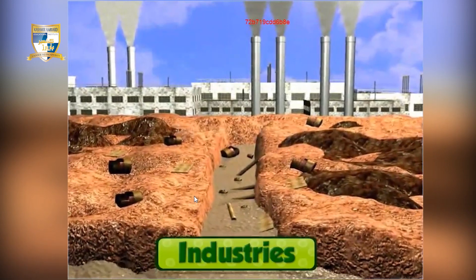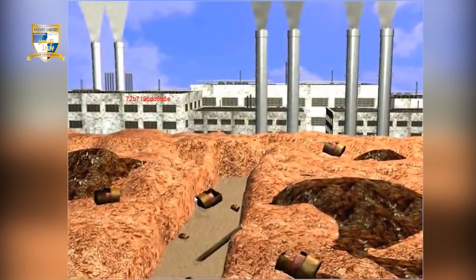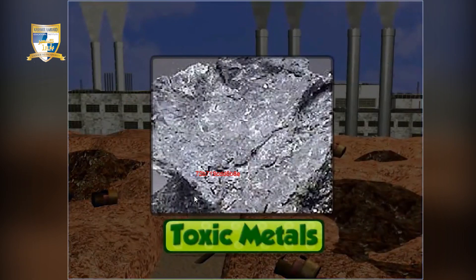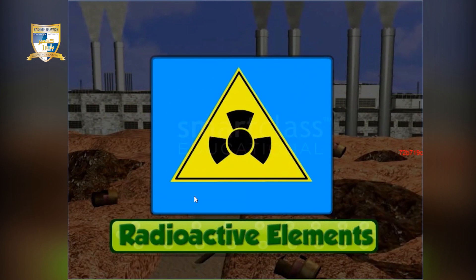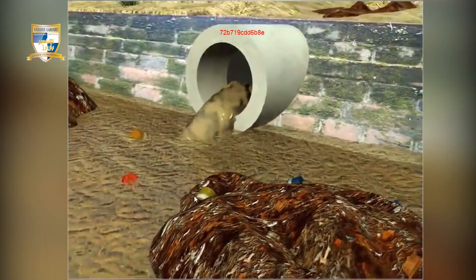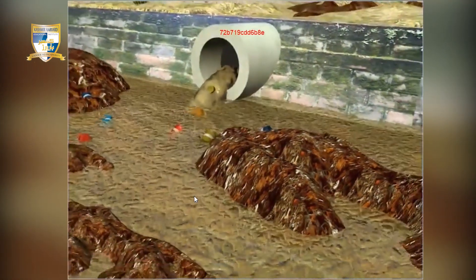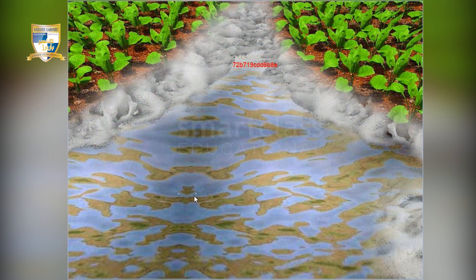Industries are another major source of water pollution. Waste materials produced in industries — such as acids, toxic metals, oil, dyes and radioactive elements — are harmful to living organisms. Industrial waste materials are discharged untreated into nearby water bodies, causing water pollution. Excessive use of pesticides and chemical manures in agricultural fields also causes water pollution, as these can run off into water bodies during the rainy season, contaminating the water.